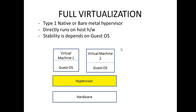Let's start with what is full virtualization. If you remember, the hypervisor is used as an intermediator — it allows your guest operating system to communicate with your hardware or the host operating system. In cloud computing, virtualization is provided using the hypervisor, and it can be done in two ways: either the hypervisor is directly installed on the host hardware, or it is installed on top of a host operating system.